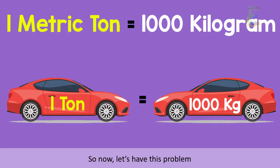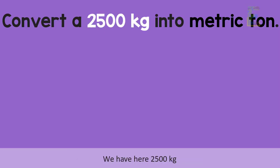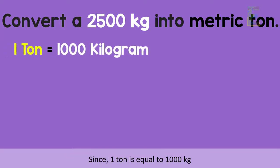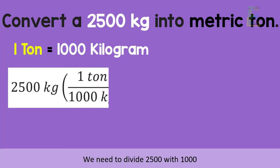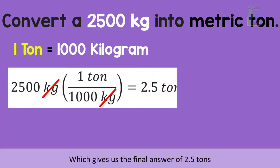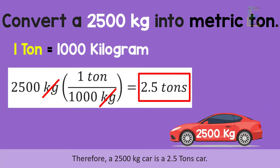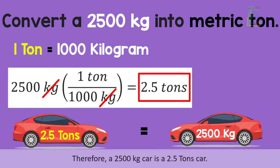So now, let's have this problem. Convert a 2,500 kilogram car into metric ton. We have here 2,500 kilograms. Since 1 ton is equal to 1,000 kilograms, we need to divide 2,500 with 1,000, which gives us the final answer of 2.5 tons. Therefore, a 2,500 kilogram car is a 2.5 tons car.